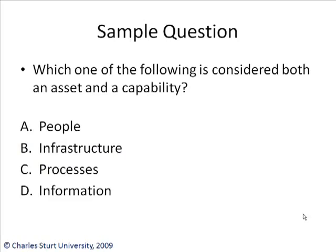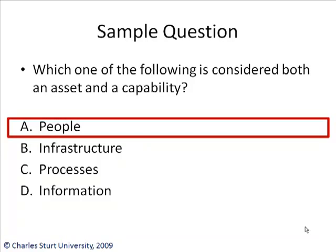Knowing my little videos by now, you always get a sample question with the theory. So here's the question: which one of the following is considered both an asset and a capability? I'll give you a couple of seconds to think about the answer. The correct answer is people. People are both assets and capabilities — especially capable people have become capabilities.